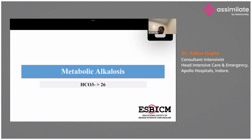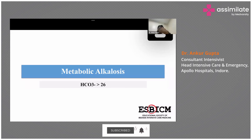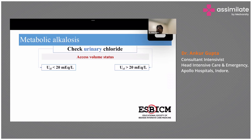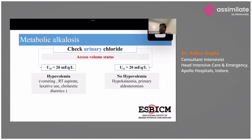Metabolic alkalosis from an ICU point of view: whenever bicarb is more than 26, you need to look for causes. 90% of the time, there are two etiologies — one is hypovolemia (contraction alkalosis), for which you give fluid; the second is hypokalemia, for which the patient will respond with potassium supplementation rather than fluid.